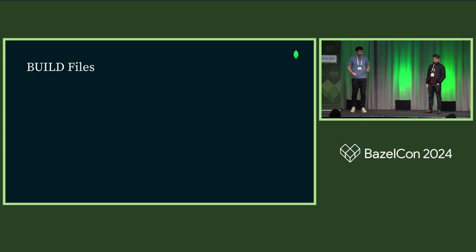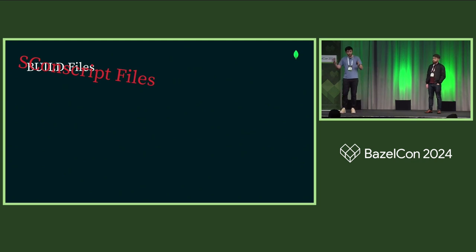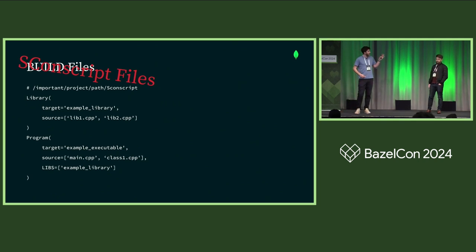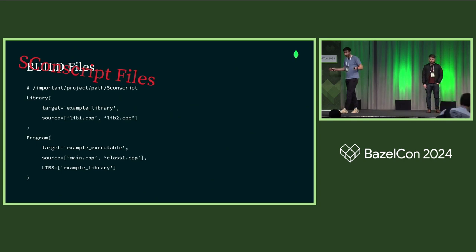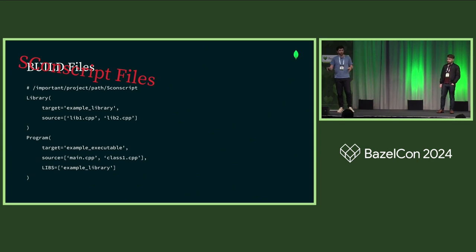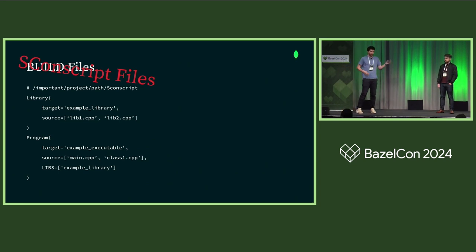Now let's talk about SCons script files — build files — which you may notice have some striking similarities to other build systems. There are two things to highlight: libraries and programs. A library can take in header files and CPP files and build a shared or static archive. A program can take in several libraries, CPP and header files, and build an executable on Windows, Mac, Linux, whatever.